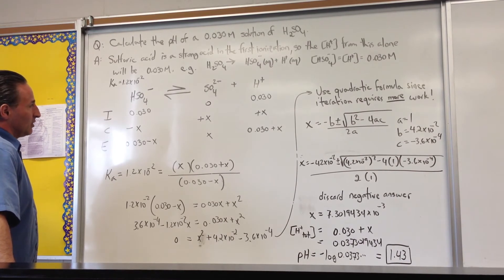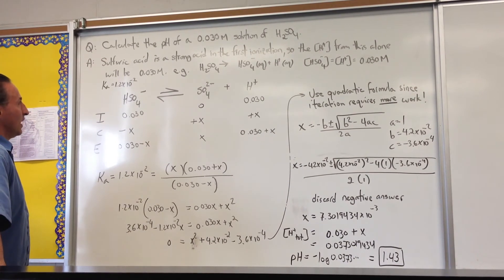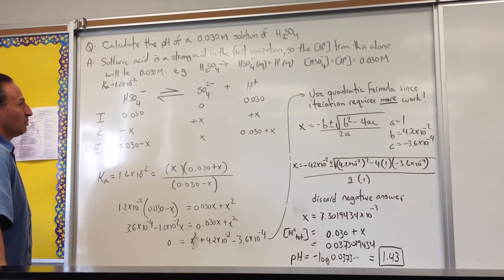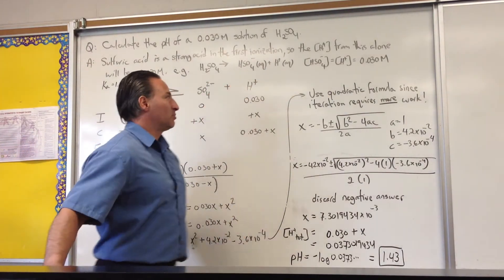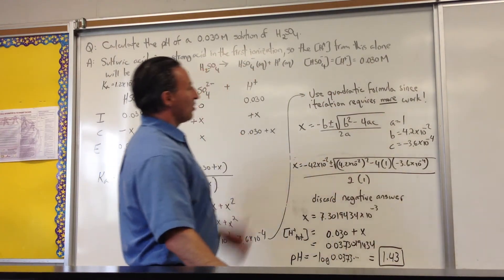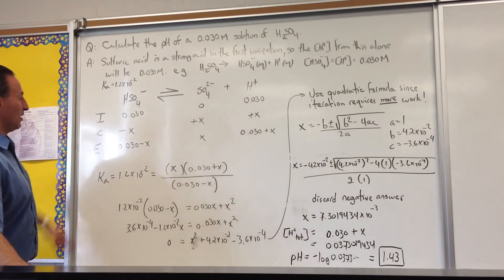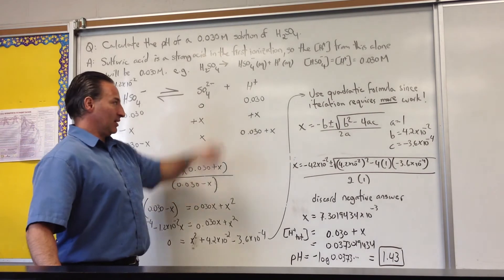So here we have an example of the sulfuric acid type of question. Calculate the pH of a 0.03 molar solution of sulfuric acid. Sulfuric acid is a strong acid in the first ionization, so the H⁺ from this alone will be 0.03 molar. I show how the first dissociation produces bisulfate and H⁺, and the concentration of each will be 0.03 before the bisulfate starts to dissociate. Now I show the dissociation of bisulfate anion into sulfate and more H⁺.